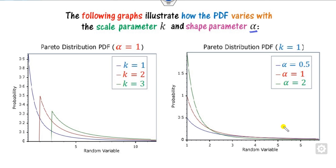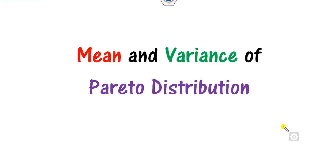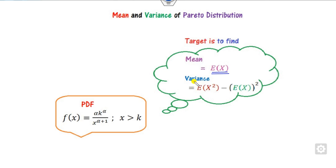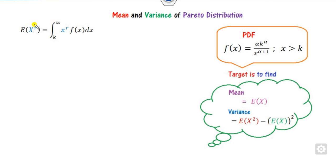Now based on this Pareto distribution, how can you find the mean and variance? Basically your target is to find the value of E(X) and the value of E(X²) minus E(X) whole square for this pdf. This is the formula for the mean. Why is it k to infinity? You can see the pdf starts from k to infinity.